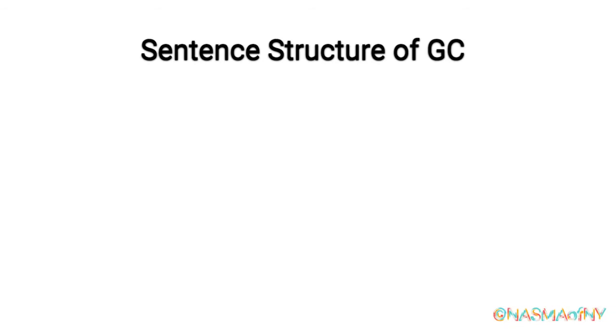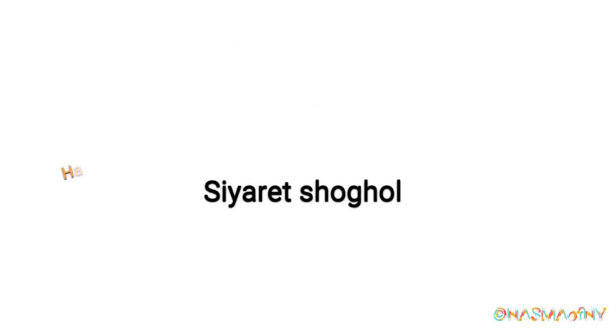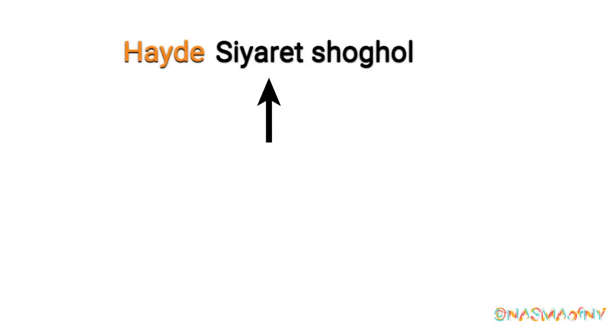Now let's get back to genitive construction and talk about sentence structure. Where do my demonstratives come? Where does my adjective come? Take the example: work car — siyart shugul. Don't forget we pronounce the T because the first noun is feminine. If I want to say 'this is the work car,' do I say hayda or hayde? Hayde — look at your first noun. Your first noun determines the gender of your sentence. Siyara is feminine, so I choose hayde.